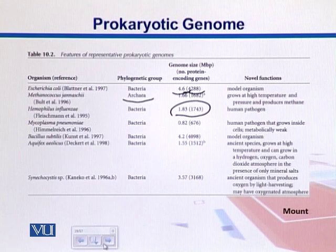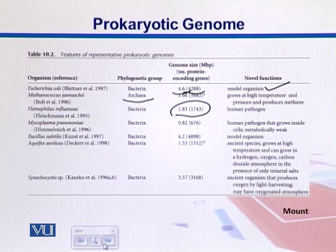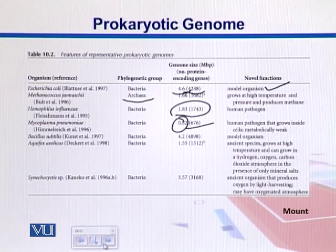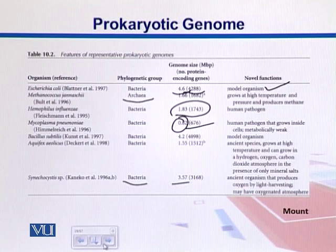E. coli is described as a model organism. The archaea Methanococcus grows at high temperatures and produces methane — potentially useful for natural gas production. We also have Mycoplasma pneumoniae, which is a pathogen, with a genome of 0.82 MB and 676 genes. Finally, Synechocystis is a bacterium with a genome of 3.57 MB and 3168 genes.